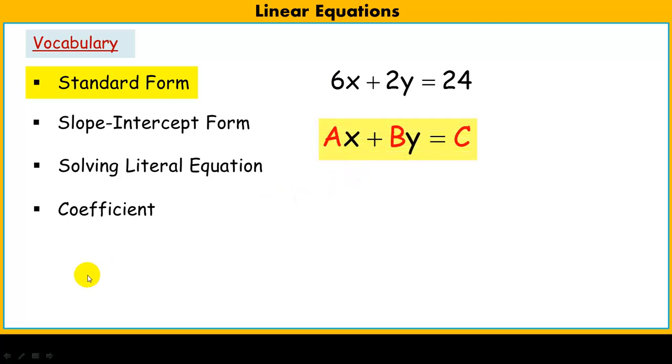Generally speaking, this is the way that we show it: Ax plus by equals c, just meaning that a is the coefficient for x, b is the coefficient for y, and c is alone.